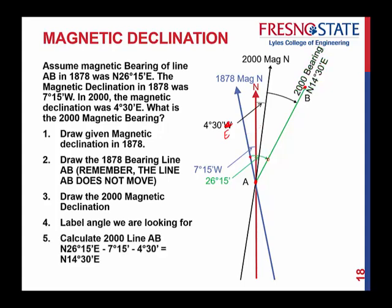Calculating: 26 degrees 15 minutes, minus 7 degrees 15 minutes, minus 4 degrees 30 minutes — the magnitude of that is 14 degrees 30 minutes east. Being that it's 14 degrees 30 minutes east and we're in the first quadrant, the new bearing is north 14 degrees 30 minutes east. The difference between 1878 and 2000 seems like a large change, but it's really not uncommon.